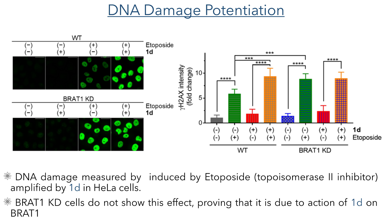In the final experiments, the researchers looked at DNA damage potentiation — the ability of these compounds to increase the DNA damage caused by etoposide, a topoisomerase 2 inhibitor and known anti-cancer compound. They assessed DNA damage by looking at the change in gamma-H2AX intensity, which measures phosphorylation of the serine-139 residue of histone variant H2AX, a known biomarker for DNA damage. They found that the activity of etoposide was increased when curcuzone 1D was also administered. Carrying out these experiments in the BRAT1 knockdown cell line showed no difference between cells administered with or without compound 1D alongside etoposide, confirming that this damage potentiation is due to the action of 1D on BRAT1.